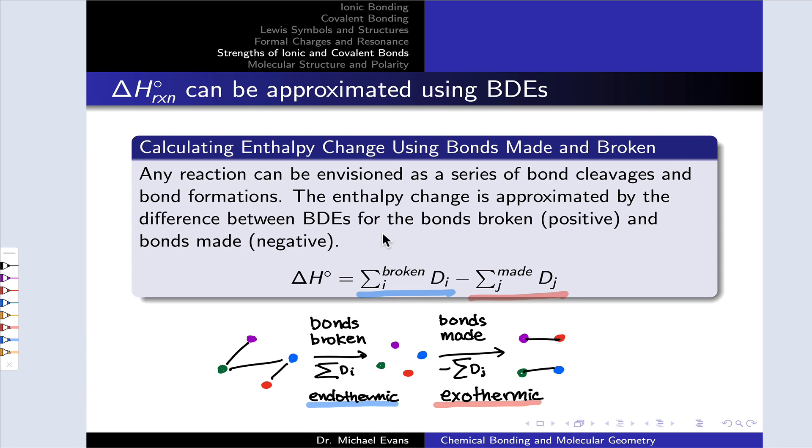So we've got an endothermic contribution to the delta H of reaction from breaking all of the bonds and an exothermic contribution to the reaction enthalpy from making the bonds found in the products. This equation is similar in spirit to the products minus reactants equation that we saw in the enthalpies of formation video. The difference is we're using bond dissociation enthalpies and focusing only on the bonds broken in the reactants and made in the products. The bonds broken contribute positive enthalpy. The bonds made contribute negative enthalpy. BDEs are typically reported as positive numbers, so we write the equation with positive enthalpy for the bonds broken and negative enthalpy for the bonds made.